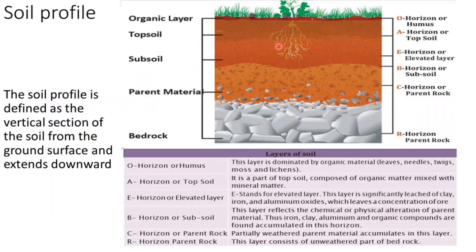This is the soil profile. The soil profile is defined as the vertical section of the soil from the ground surface, extending downward. This picture shows the layers of the soil. At the bottom we have the parent rock, also called the bedrock, given the name R horizon. This layer consists of the unweathered part of bedrock and is the parent material of the soil.